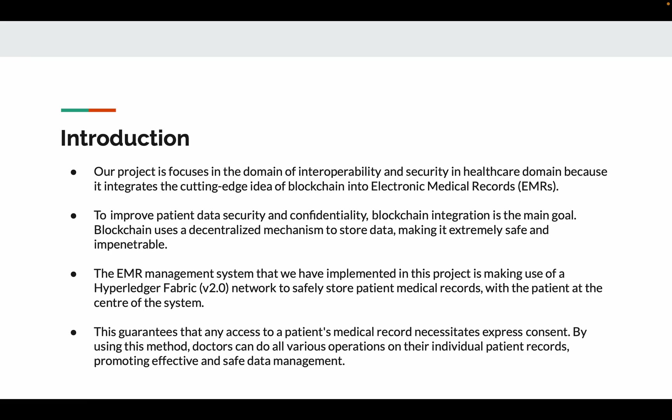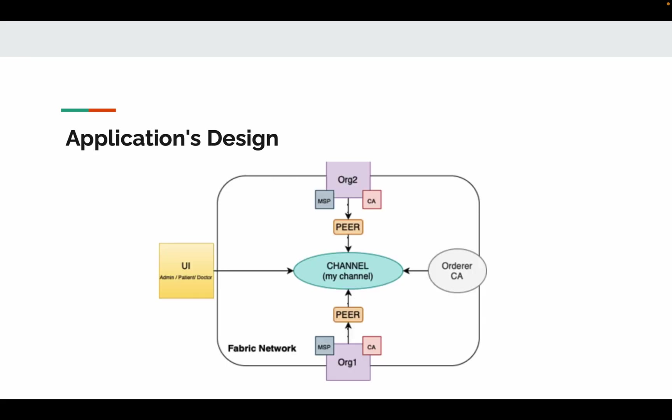This application guarantees that any access to a patient's medical history records requires express consent. Doctors can also perform various operations on individual patient records, which is one of the future use cases of our project. Currently we have used two organizations in our test networks, which would resemble hospital networks in real-world scenarios. The permissioned blockchain platform with Hyperledger Fabric provides precise privacy and access control to the patient specifically.